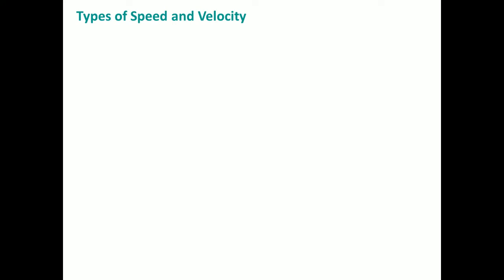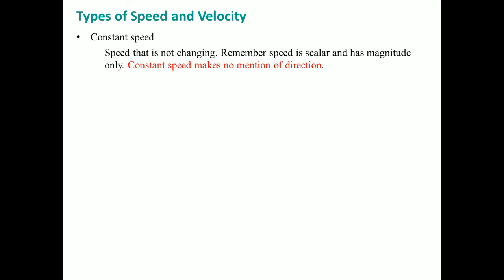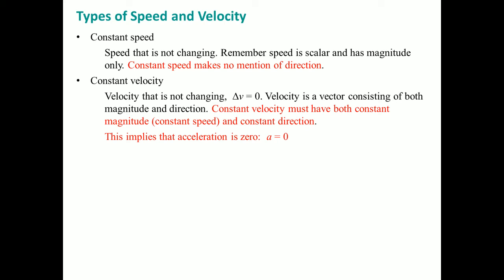There are types of speed: constant speed and constant velocity. Constant speed makes no mention of direction, but constant velocity does. So when delta V equals zero, velocity — a vector consisting of both magnitude and direction — must have both constant magnitude and constant direction. This implies a equals zero, because if velocity is constant, there is no change, and if there is no change in velocity, there can be no acceleration.